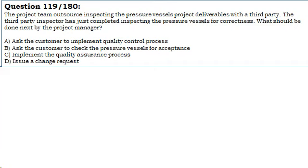The project team outsourced inspecting the pressure vessels project deliverables with a third party. The third party inspector has just completed inspecting the pressure vessels for correctness. What should be done next by the project manager?